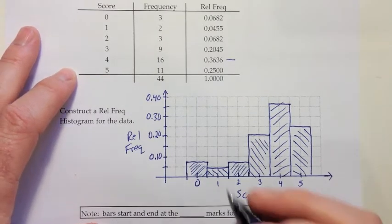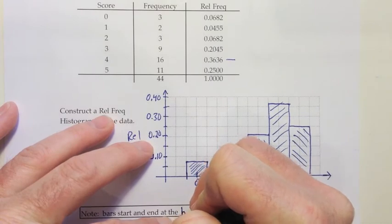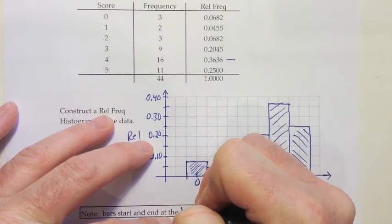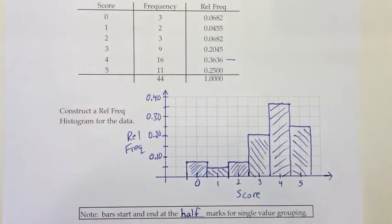That's the relative frequency histogram for single-value grouping. The main difference from class grouping is that bars go from half-mark to half-mark rather than lower cut point to lower cut point — this is only done for single-value grouping, to make it clear which number each bar represents. For grouped classes, we still go lower cut point to lower cut point.